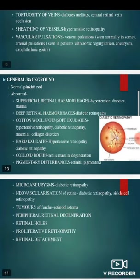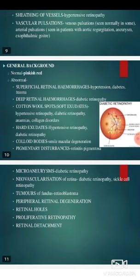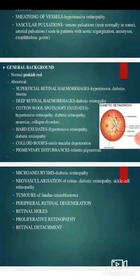The general background is normally pinkish red. Abnormalities include superficial retinal hemorrhages in hypertension, diabetes, or trauma; deep retinal hemorrhages in diabetic retinopathy; cotton wool spots or soft exudates in hypertensive retinopathy, diabetic retinopathy, anemias, and collagen disorders; hard exudates in hypertensive retinopathy and diabetic retinopathy; colloid bodies in senile macular degeneration; and pigmentary disturbances in retinitis pigmentosa.